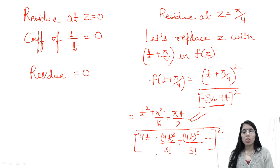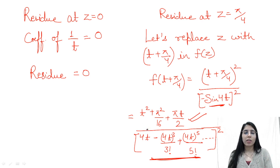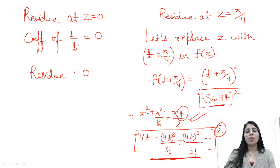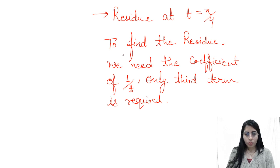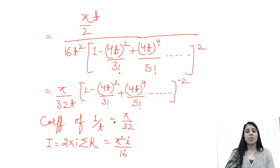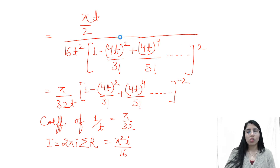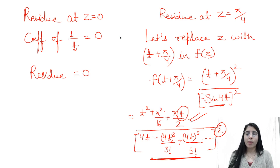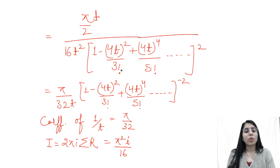After writing the sine series expansion in the denominator and squaring it, we want the coefficient of 1/t to find the residue. From the numerator, taking t common gives t square outside due to the square present, leaving us with 1/t. The relevant term is the third term from the numerator: π/(2t). Combined with the denominator factor of 16t², after taking t common which becomes t² because of the square, we get 1/t, and the coefficient of 1/t from the first contributing term gives us π/32. That is the residue at z = π/4.